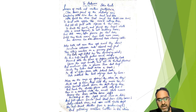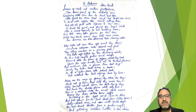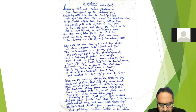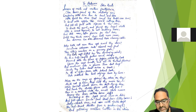Stanza three — these lines are very important: 'Where are the songs of spring? Ah, where are they? / Think not of them, thou hast thy music too, — / While barred clouds bloom the soft-dying day, / And touch the stubble-plains with rosy hue; / Then in a wailful choir the small gnats mourn / Among the river sallows, borne aloft / Or sinking as the light wind lives or dies; / And full-grown lambs loud bleat from hilly bourn; / Hedge-crickets sing; and now with treble soft / The red-breast whistles from a garden-croft; / And gathering swallows twitter in the skies.'